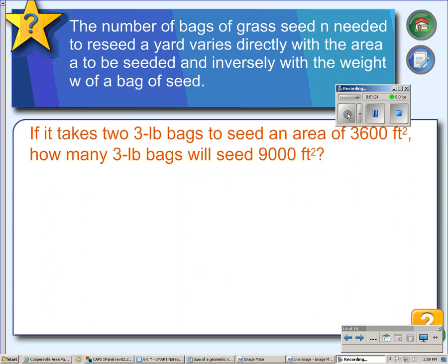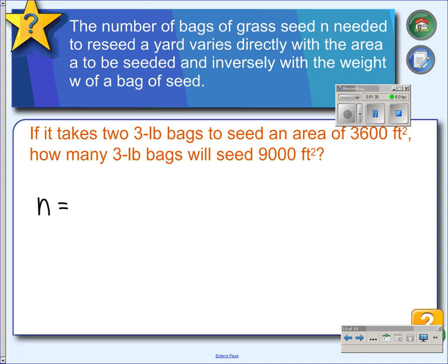If we take that statement, we can write it into an equation. The number of bags of grass seed N that will be needed to reseed a yard varies directly with the area, so area gets multiplied by K, and the weight is inversely, so that W divides K.